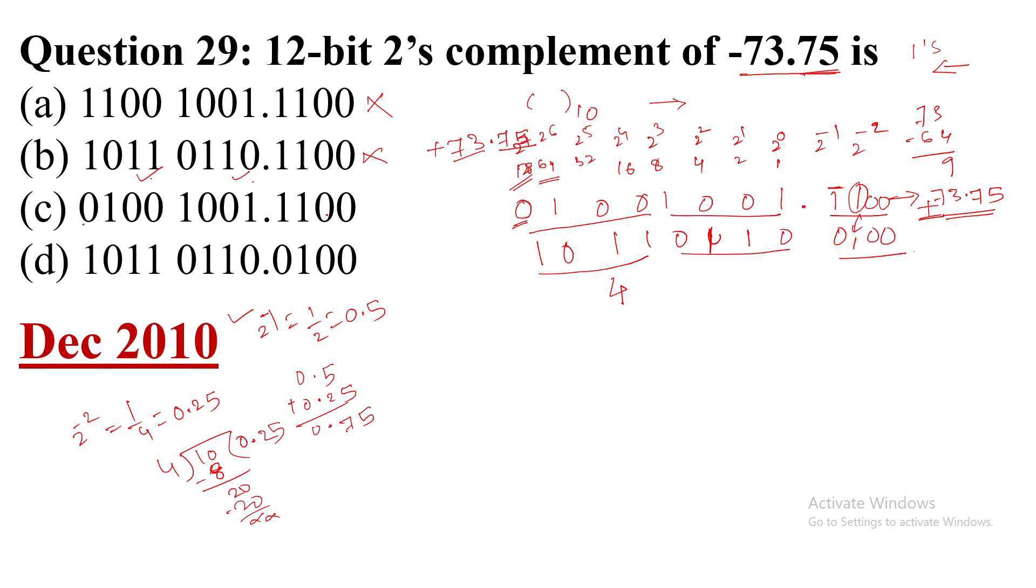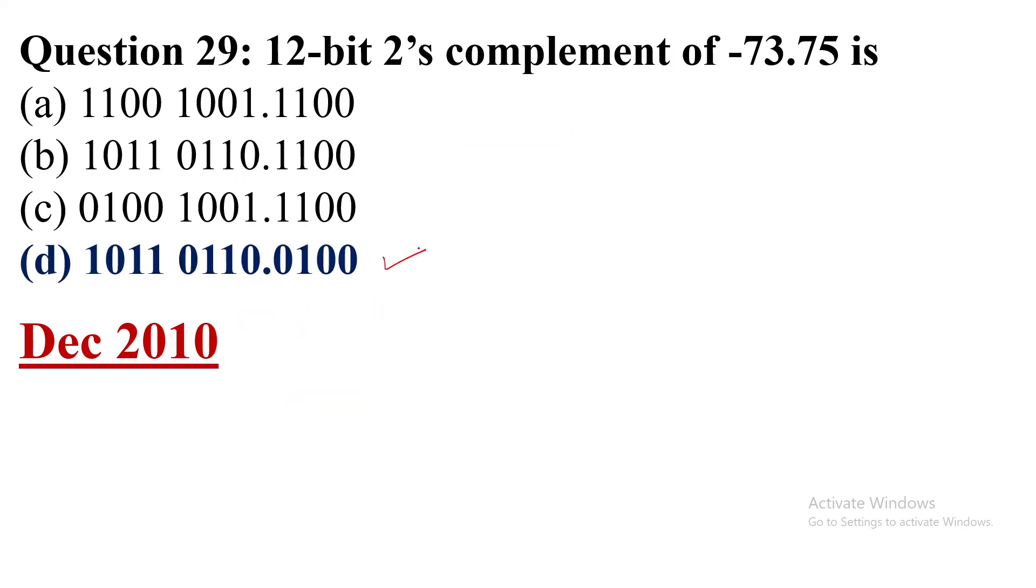Option c started from 0, so this is already wrong. Option d: 1011, yes, first four bits correct. Next four bits 0110, yes, correct. And point afterwards 0100, yes. So option d is the correct answer. Thank you very much for watching this video.